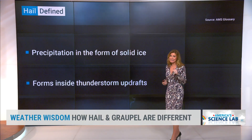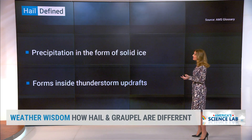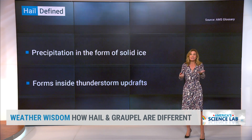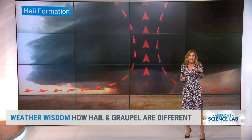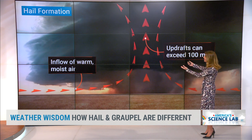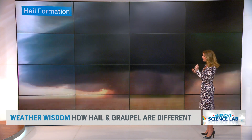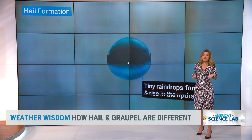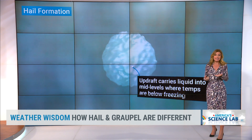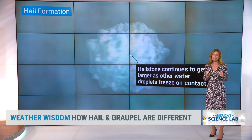We start with hail defined because that's the easier one, just because we're all so familiar with it. It's precipitation in the form of solid ice. It forms inside thunderstorm updrafts, and you need that really vigorous rising air to allow time for hail to grow. When air rises up into a thunderstorm and the cloud grows, we get these little tiny particles of ice that, as they continue to be suspended within that updraft, they can grow in size. These particles are high up in the thunderstorm, well above where the freezing level is.